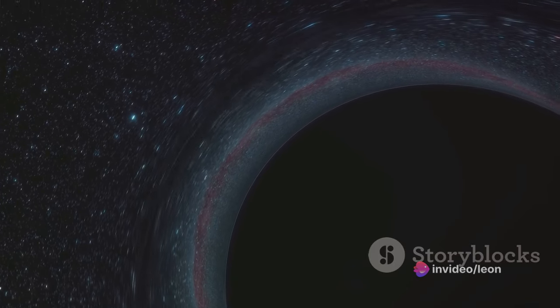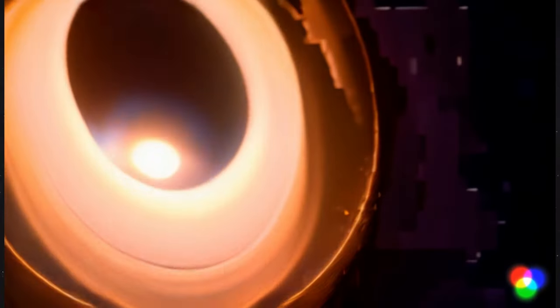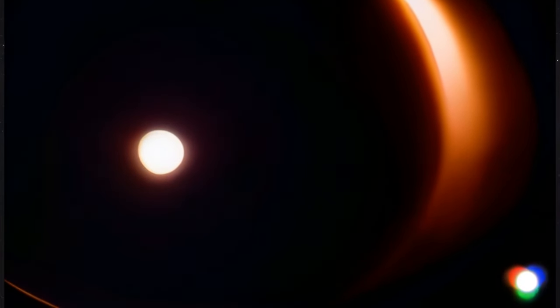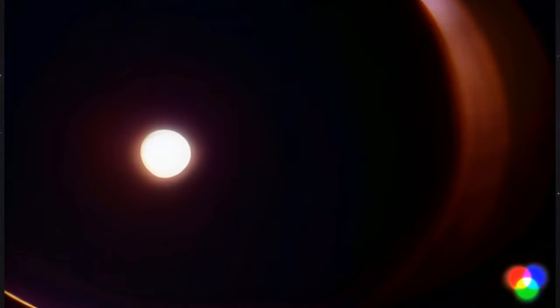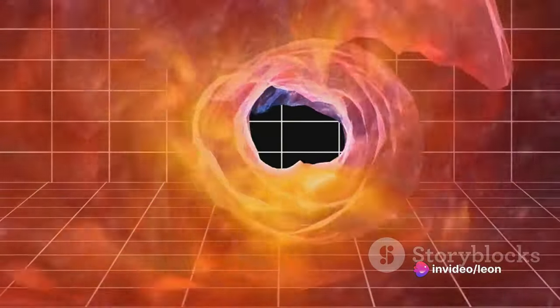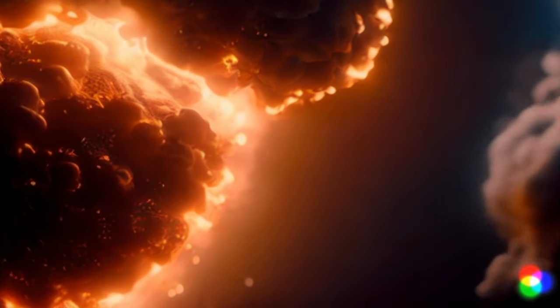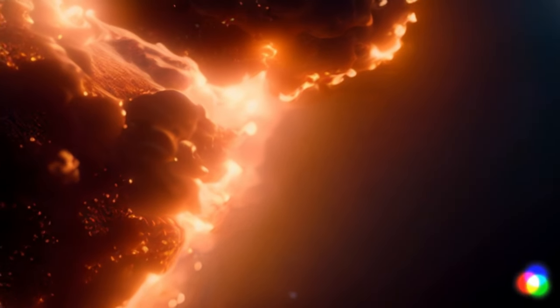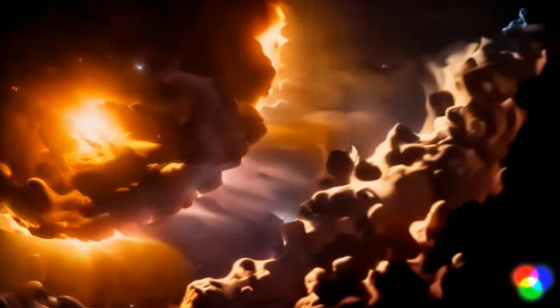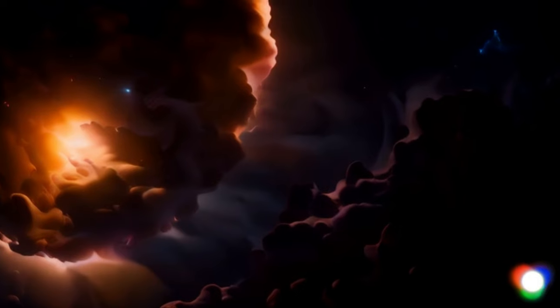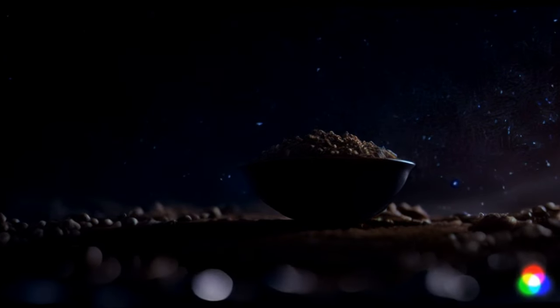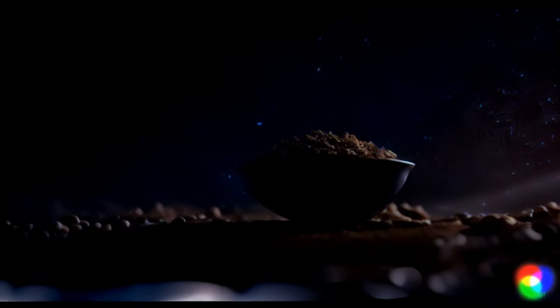But what happens when the last black hole disappears? All that will remain are photons. The universe's last vestiges of matter and dark energy will continue to push the universe to expand. The universe reaches a state known as heat death, where all matter achieves thermal equilibrium. The entropy or disorder of the universe stops increasing. When the last black hole disappears, the universe will be left with only photons, gradually cooling towards absolute zero.